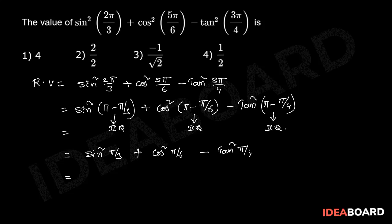That equals sin square π/3, which is (√3/2)² = 3/4, plus cos square π/6, which is (√3/2)² = 3/4, minus tan π/4 = 1, so 1² = 1. That equals 6/4 minus 1, which is 3/2 minus 1, equal to 1/2. So the correct answer is the fourth option.